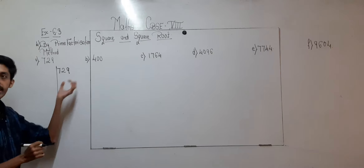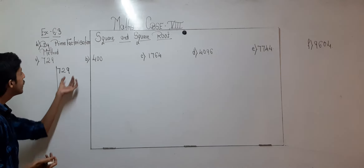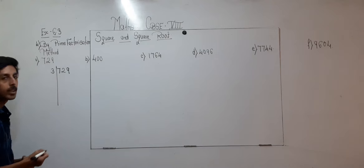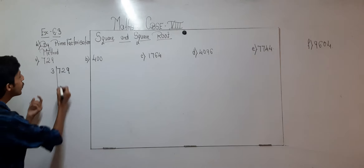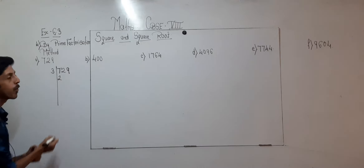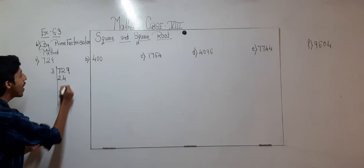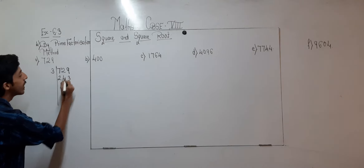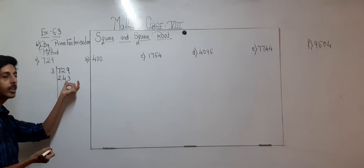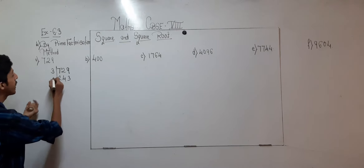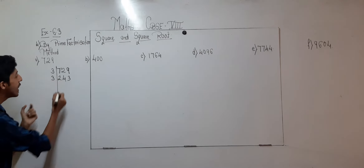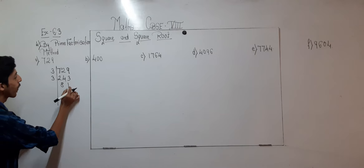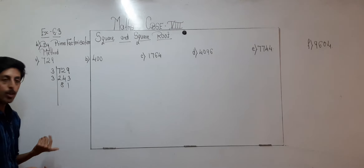The last digit is 9, which comes in the table of 3. So we start with 3: 3 times 6 is 18 — wait, remaining is 1. Then 3 times 4 is 12 and 3 times 3 is 9. The last digit is again 3, so we start again with 3: 3 times 8 is 24, 3 times 1 is 3. Now 1 is again coming in the table of 3.